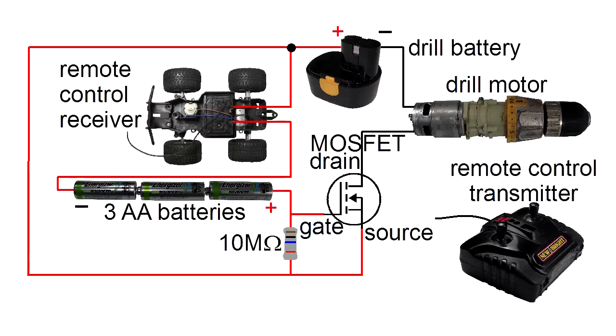The drill will be powered when the electrical current is allowed to flow through this part of the circuit, between the drain and source. But the way a MOSFET works is that if the gate and source are at the same voltage, then no current will be allowed to flow between the drain and source. And that's the situation when the remote control is off.